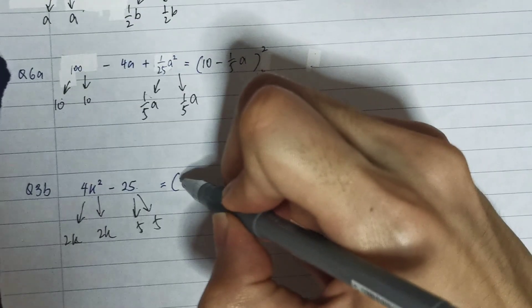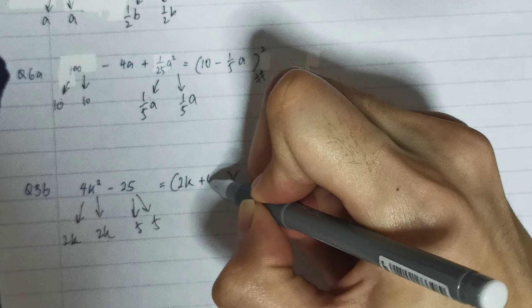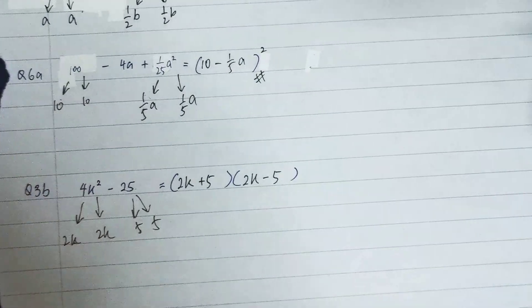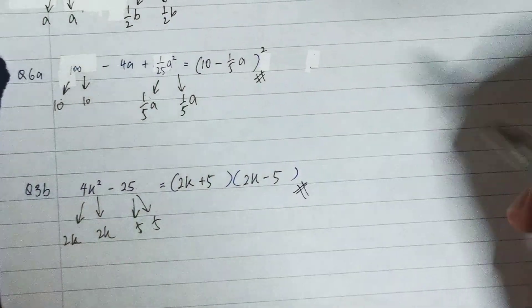So my a in this case will be 2k, and my b will be 5. So I just need to write it down (2k + 5). One is plus, the other one is minus. So this is how I write my factorized answer.